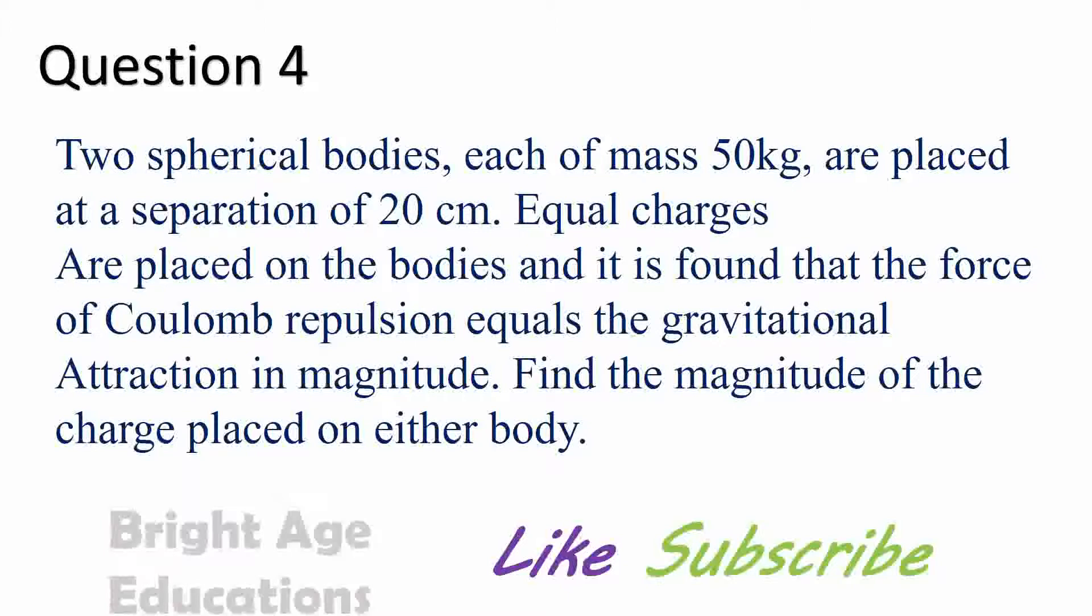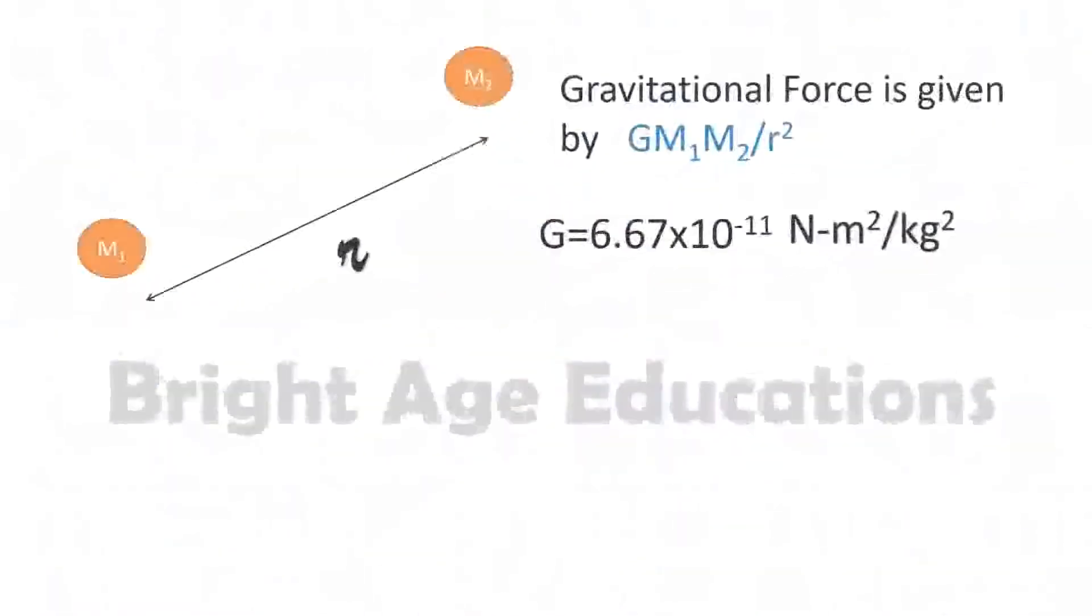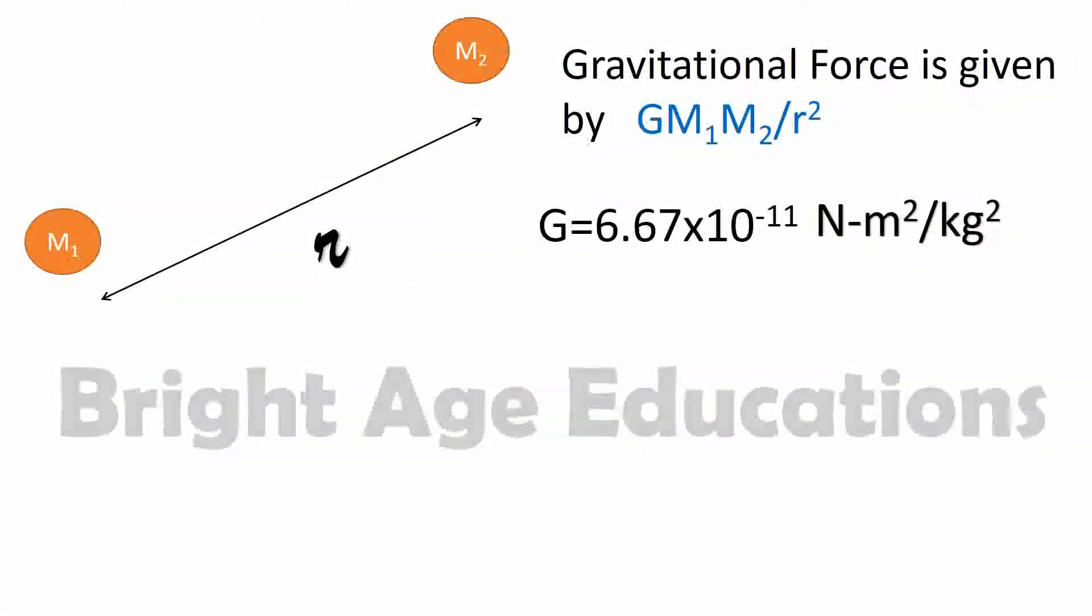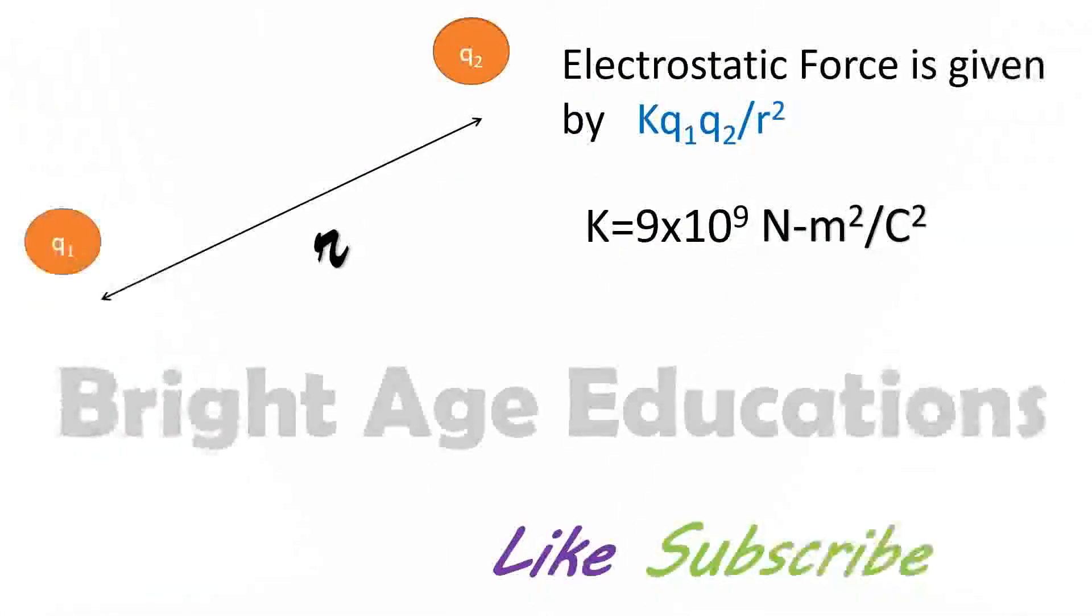Again gravitational force, as discussed in question number 1, link available in description, is given by Gm1m2 by R square. The electrostatic force between two particles separated by distance R is given by Kq1q2 by R square.